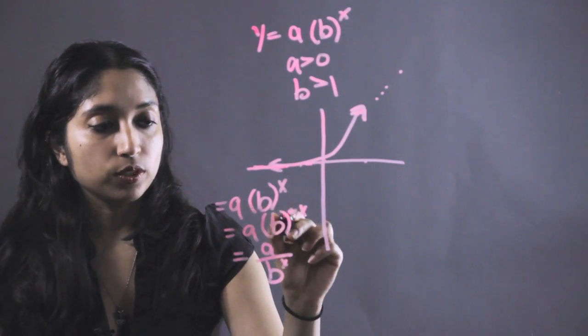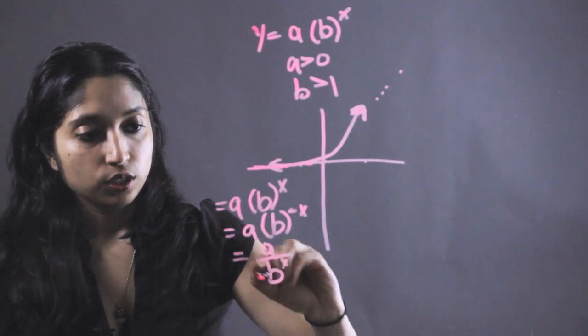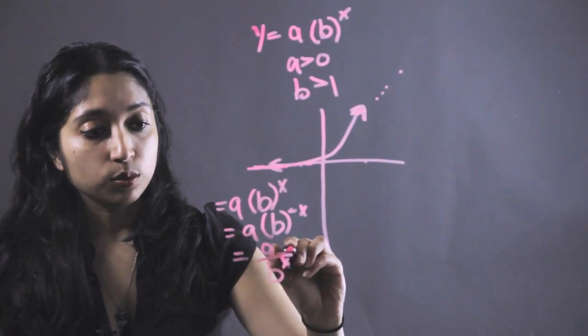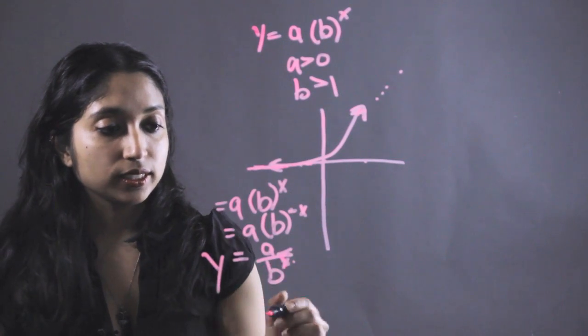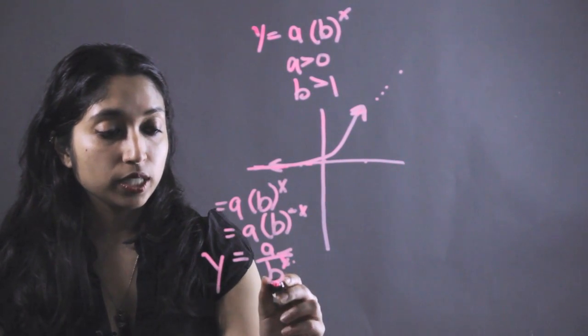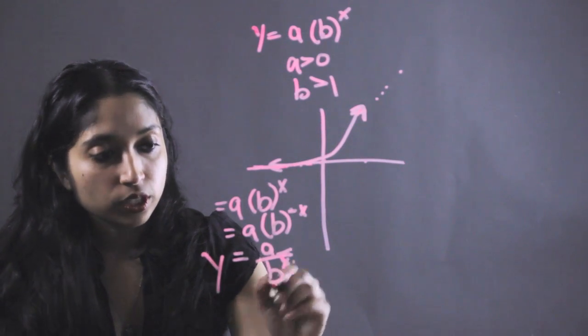Because remember, if you're multiplying this by a negative exponent, you're kind of taking the inverse of it, so we're going to get Y equals A over B to this X. Now, as X gets greater and greater, because B is bigger than 1, this number right here is going to get larger and larger.